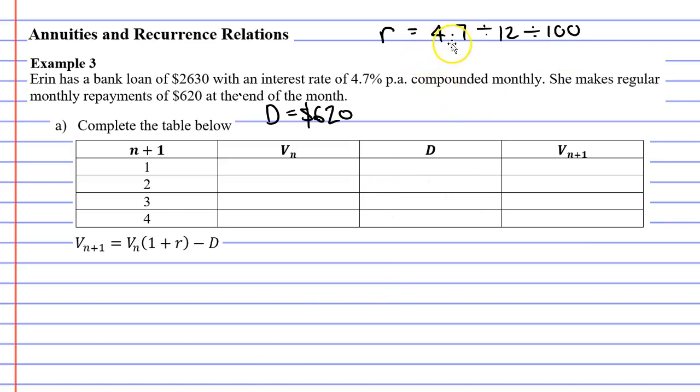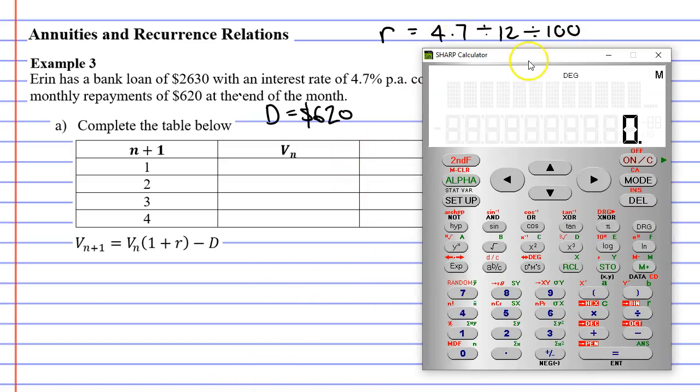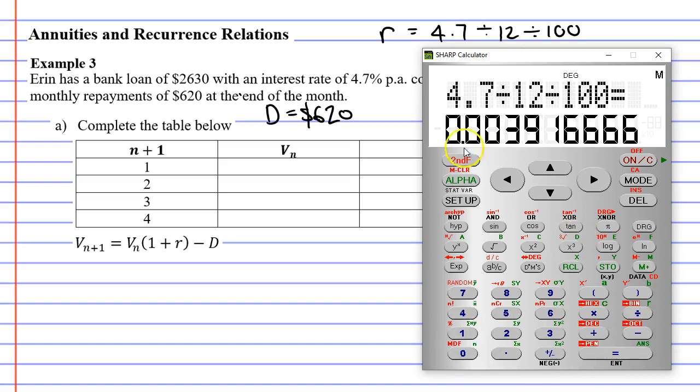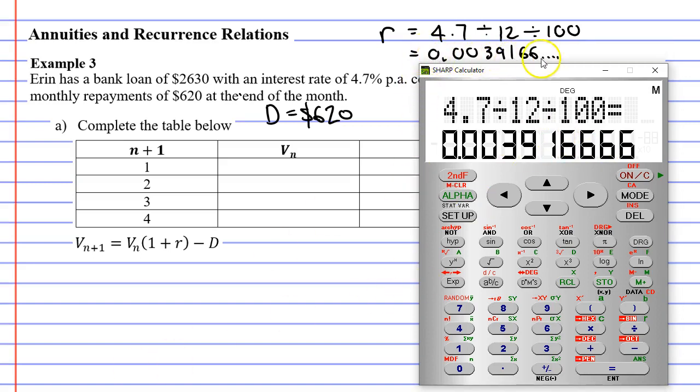Let's do this all in one calculation. 4.7 divide 12 divide 100 comes out to 0.003916666. So it's quite a complicated decimal here. I'll start by writing it down. So we've got to think to ourselves, how are we going to substitute this nasty decimal into our recurrence relation?